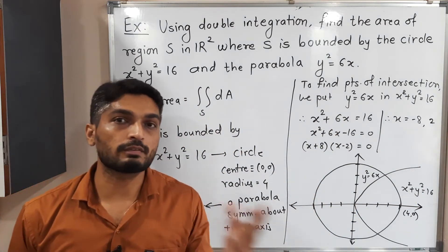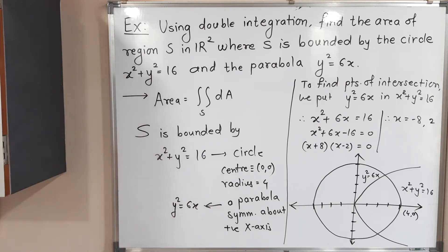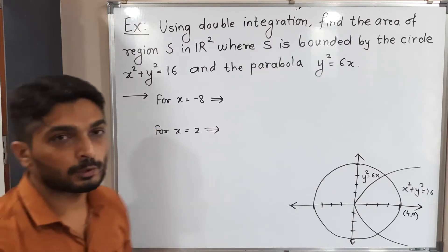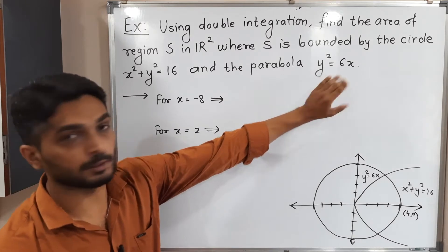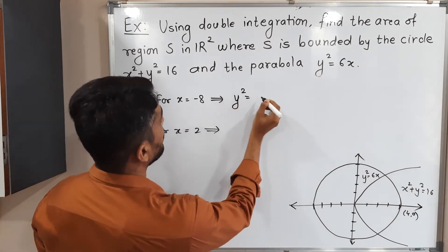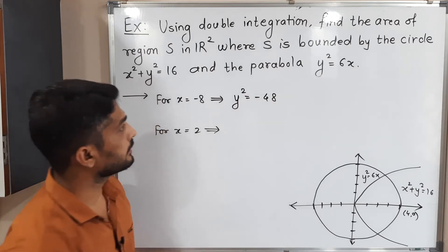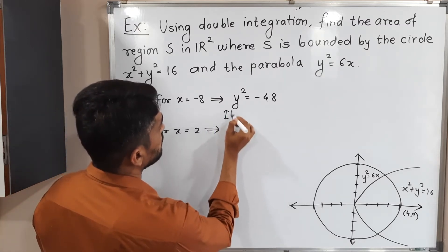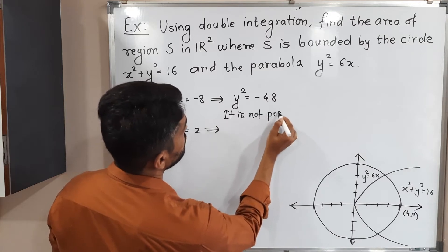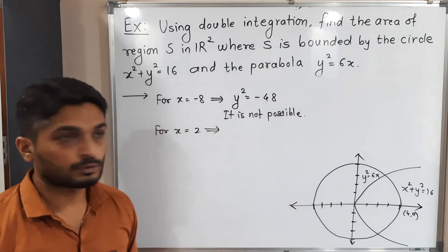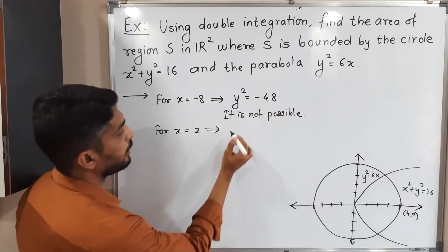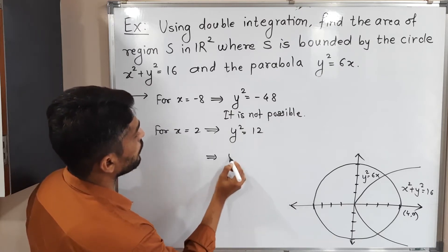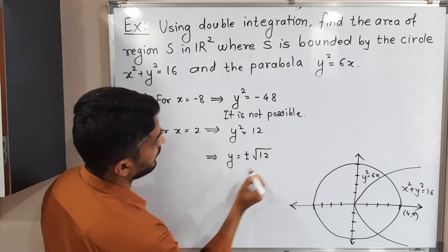For both values of x we find the values of y. Starting with x = -8, we get y² = -48. But a square cannot be negative, so this is not possible. For the second value x = 2, we get y² = 12.